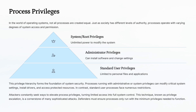Not all processes are equal. Some run as root or system, meaning they can do anything. Others run as admin or standard user with more limited rights. Attackers are always looking to elevate a process's privileges, turning a small foothold into full control. Defenders use the principle of least privilege — only give processes the permissions they really need.